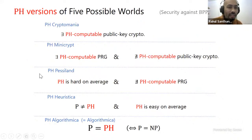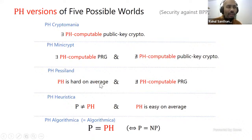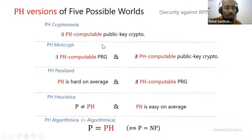We consider a relaxed version where we look at pH versions of the five possible worlds. pH-Algorithmica is where pH equals P — the same as NP equals P. pH-Heuristica is a world where pH is hard in the worst case but easy on average. pH-Pessiland is a world where pH is hard on average and pH-computable pseudo-random generators don't exist. An earlier work of Shuichi proved interesting results about pH-Heuristica, and in this paper our focus is on pH-Pessiland.